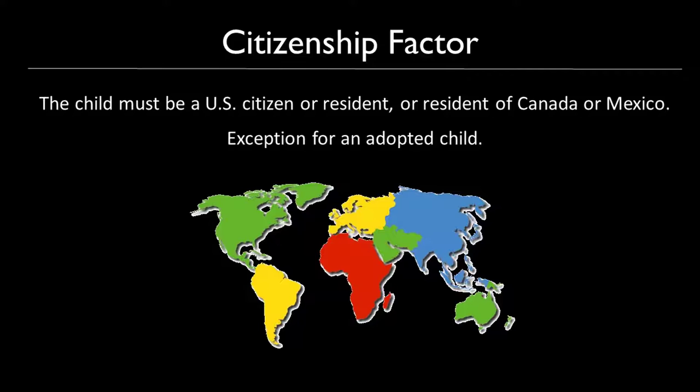The child must be a US resident or citizen, or a resident of Canada or Mexico to qualify. There is an exception for an adopted child — the child does not need to be a citizen or resident of the United States as long as that child lives with the US citizen even abroad. For example, if you are living in Switzerland and you adopt a child from Africa, even though the child is not a resident or citizen of Canada, Mexico, or the United States, as long as they are living with the US taxpayer, they do qualify as a qualifying child.